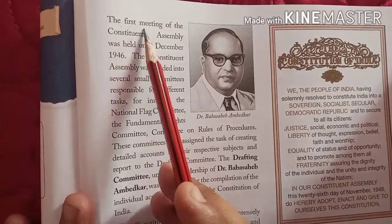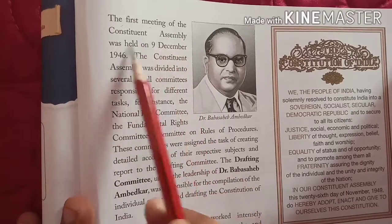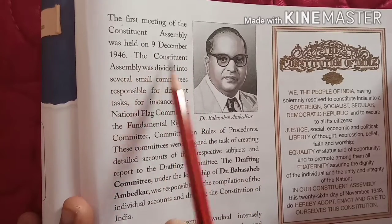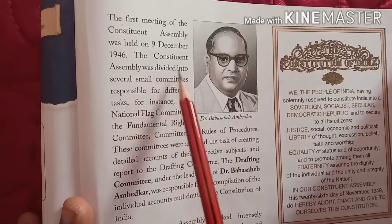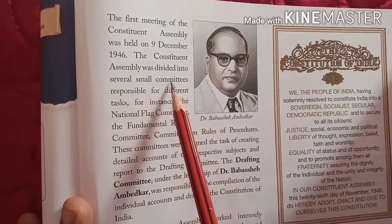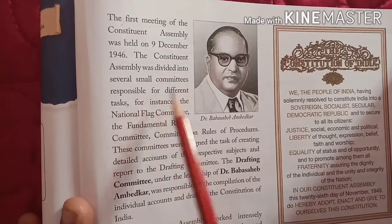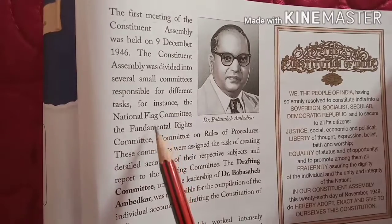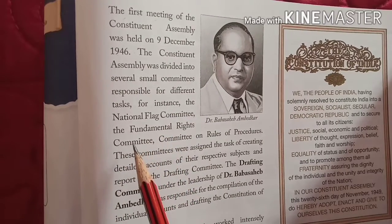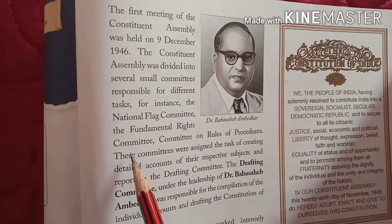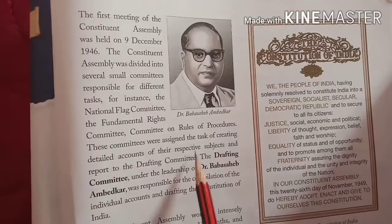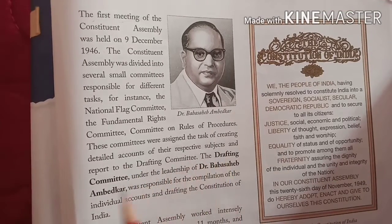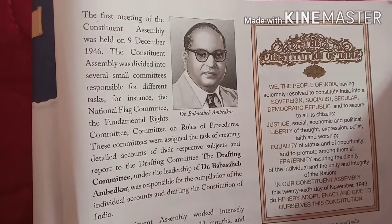The first meeting of the Constituent Assembly was held on 9th December 1946. The Constituent Assembly was divided into several small committees responsible for different tasks — for instance, the National Flag Committee, the Fundamental Rights Committee, and the Committee on Rules of Procedure. These committees were assigned the task of creating a detailed account of their respective subjects and reporting to the drafting committee.